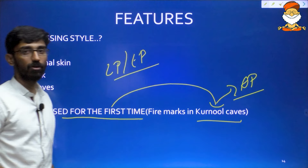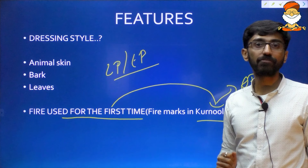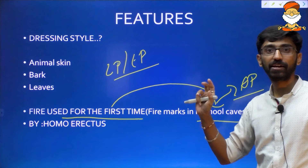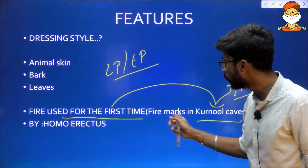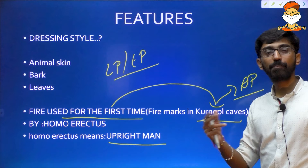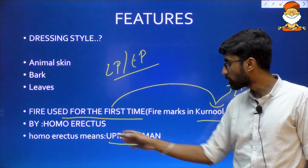For the first time in human history, fire was used during Lower Paleolithic — also called Early Paleolithic — and the fire marks can be seen in Kurnool caves in Andhra Pradesh. Which human ancestors used fire for the first time? It was Homo erectus — not Homo habilis. Homo erectus is the first human species or human ancestor who used fire. Homo erectus means 'upright man.' The full evolution of humans had not yet happened even during Early Paleolithic.